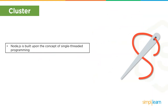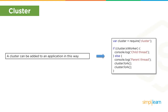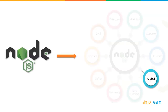The next component is cluster. Node.js is built upon the concept of single-threaded programming — a single instance of Node.js runs in a single thread. To take advantage of multi-core systems, users can launch a cluster of Node.js processes to handle the load. A cluster can be added to an application, as shown in the code example.